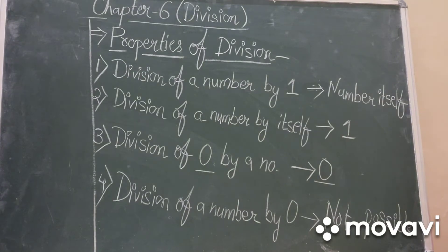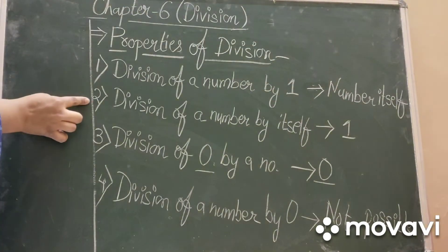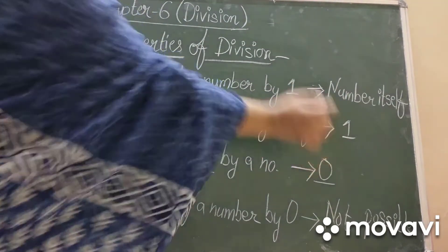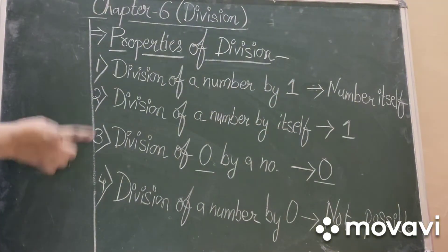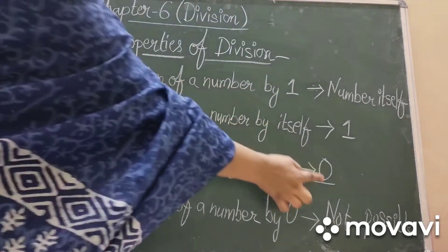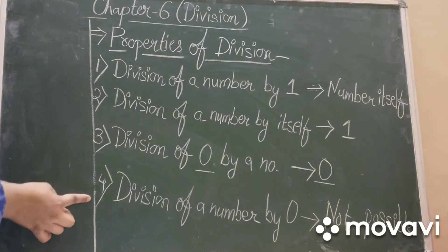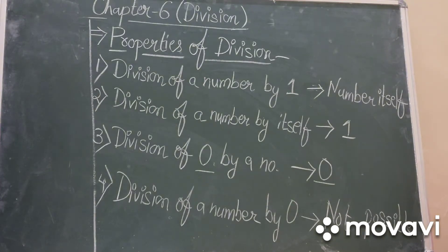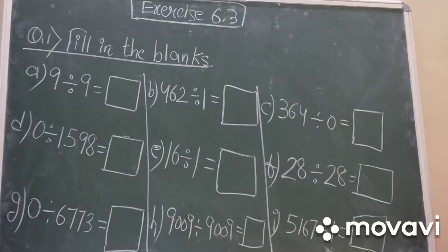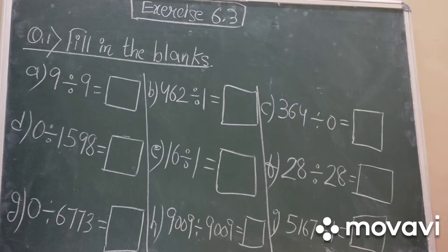So what are our four properties? First: division of a number by one always gives you the number itself. Second: division of a number by itself always gives you one. Third: division of zero by a number always gives zero. Fourth: division of a number by zero is not possible. Now come to exercise 6.3, which is based on these properties — aap wo 4 properties bhoat achse se by heart karni hai, kyunki ye poora exercise usi pe dependent hai.